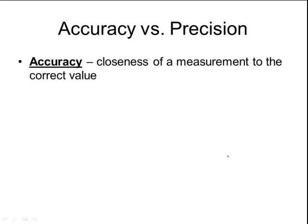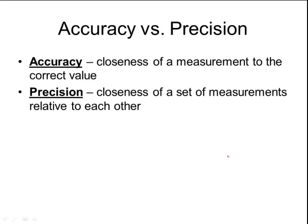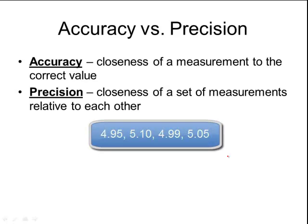Accuracy is the closeness of a measurement to the correct value. So let's say you were measuring something with a ruler and its actual measurement was 5 centimeters and you measured it to be 4.95 centimeters — that would be pretty accurate, you're really close to that correct value. Whereas precision is the closeness of a set of measurements relative to each other. So if you measure that same thing five times and got 4.95, 5.1, 4.99, and 5.05, those would all be very precise because relative to each other they are very close.